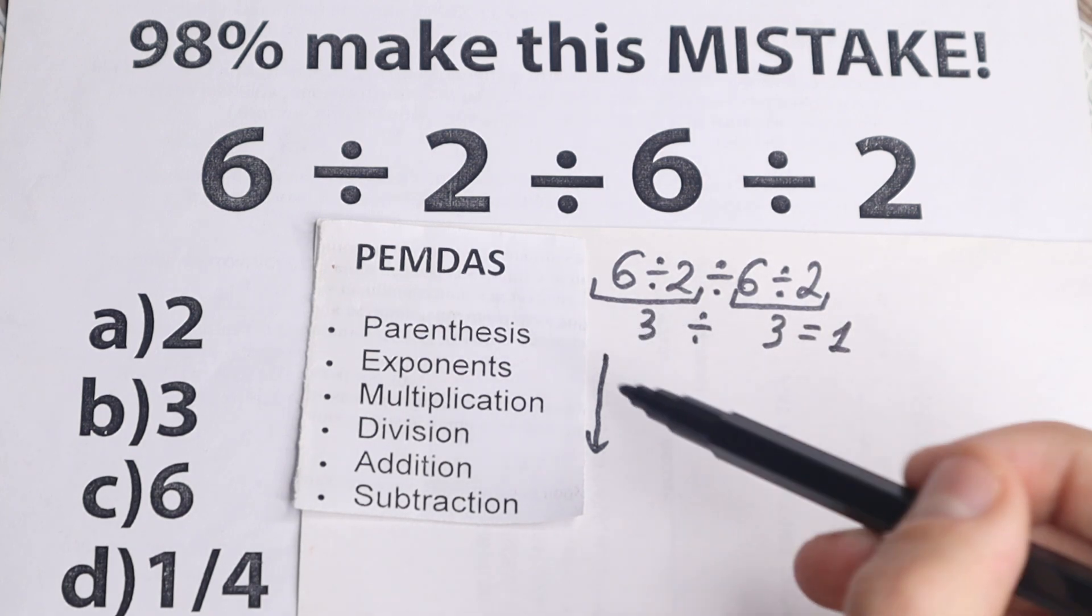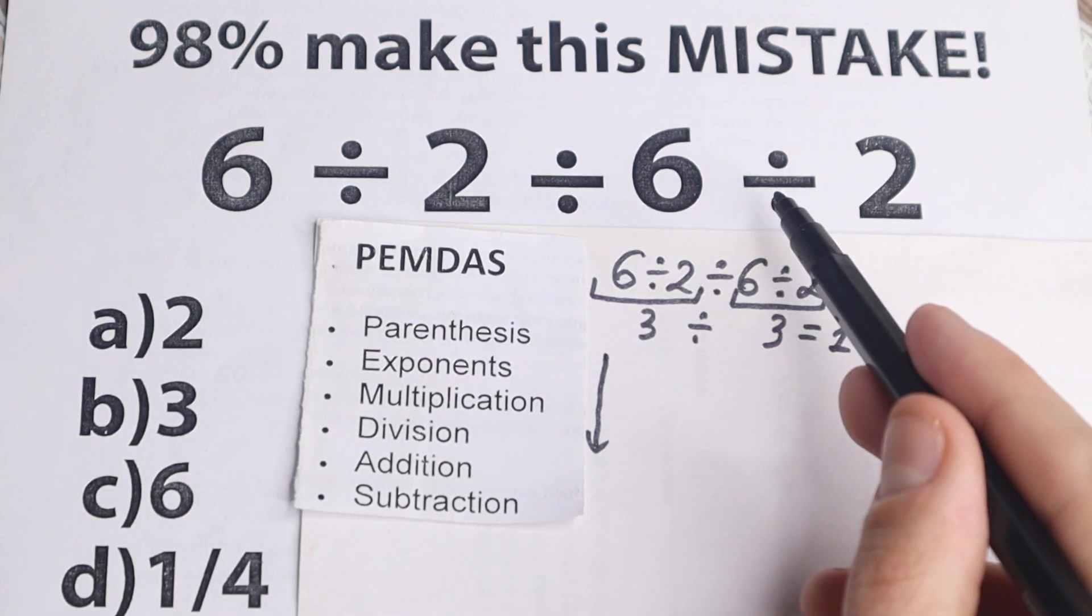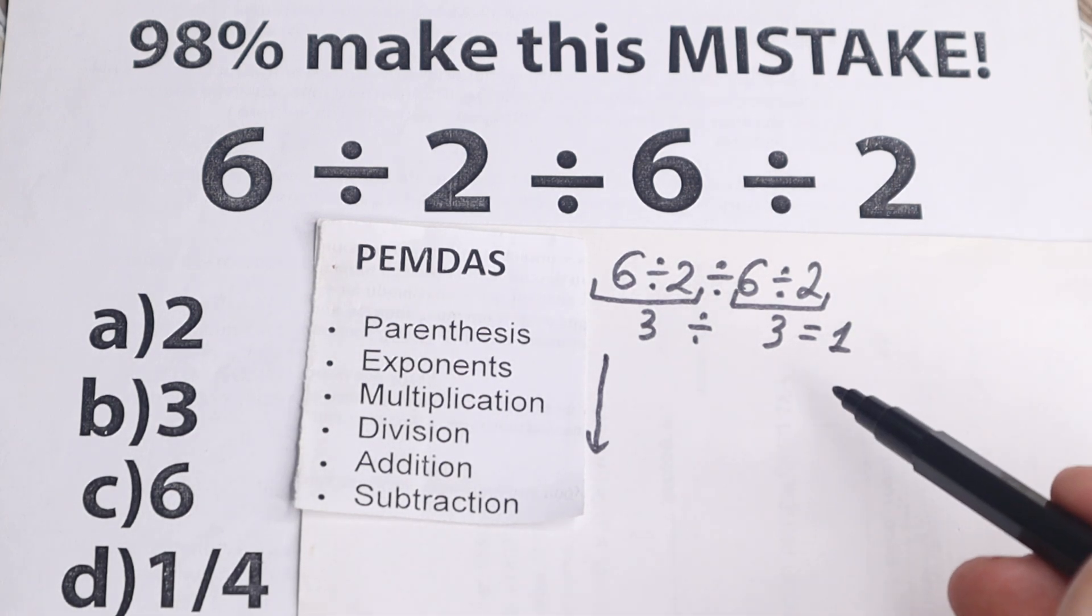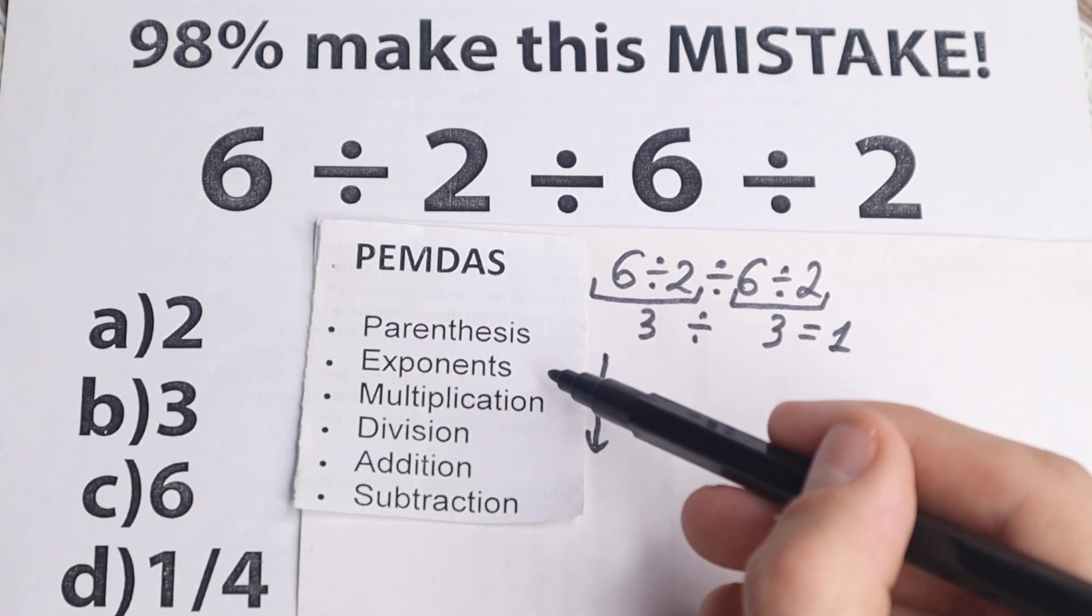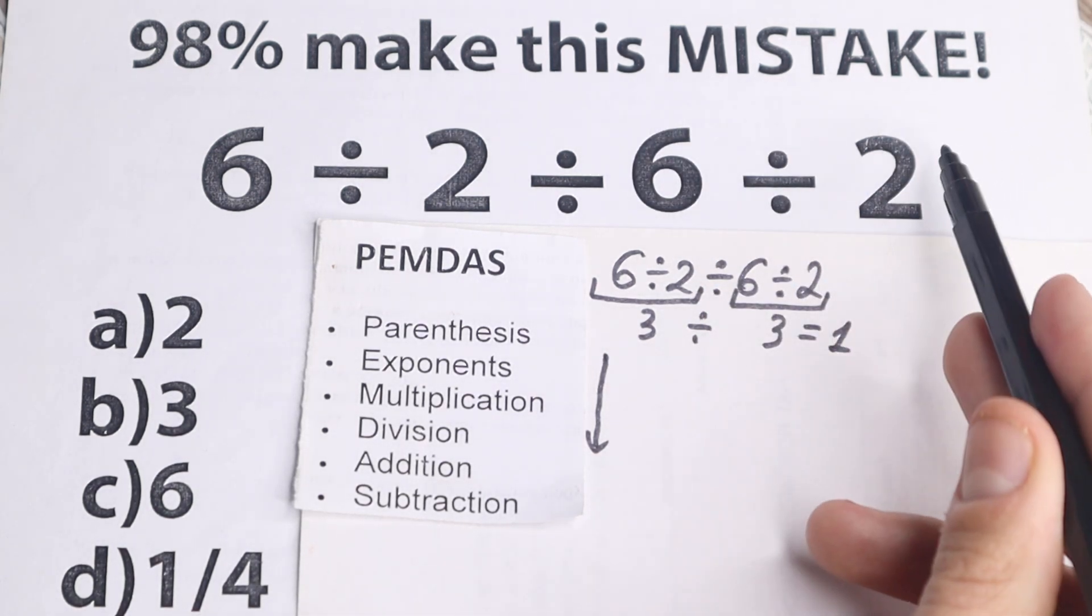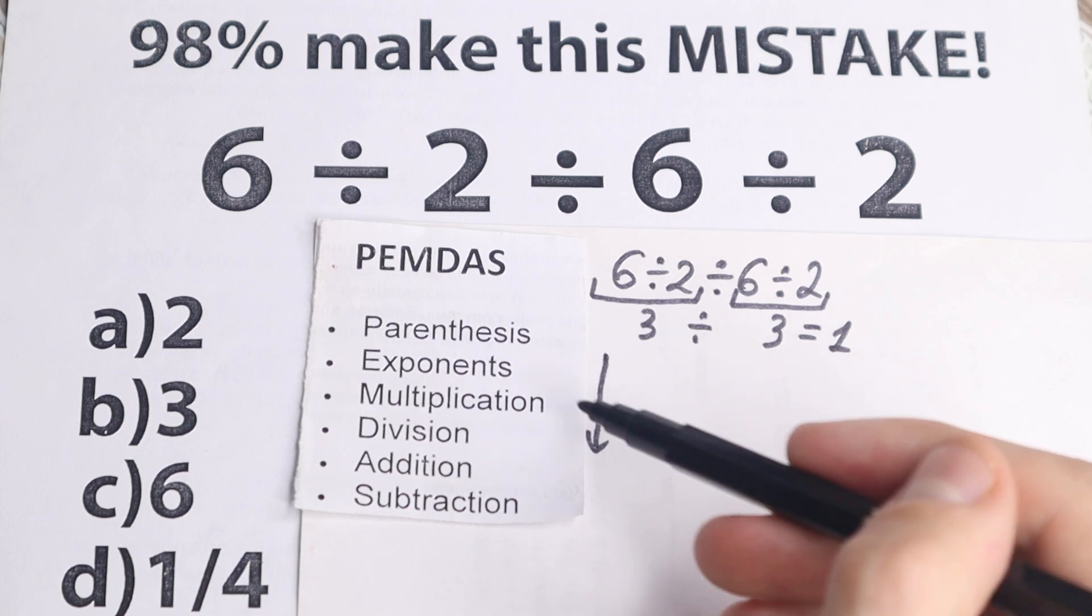And right here we have the first step, parentheses. So are there any parentheses right here? No, I don't see any of those, we don't have any parentheses, so we go to the next step. The next step is exponents right here, so are there any squares, cubes right here, fourth power, tenth power? No, I don't see any of those, so we just skip this part.